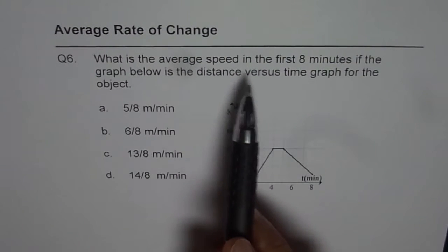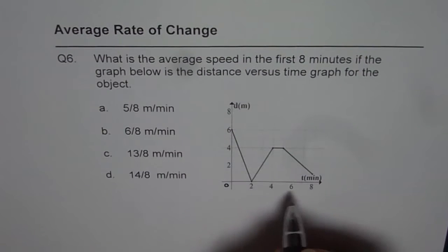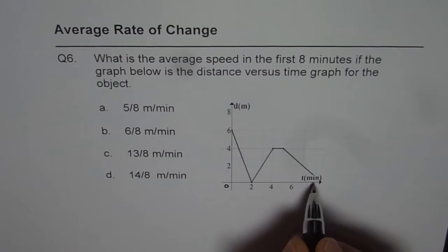When we are saying average speed in the first eight minutes, that means we have to find from T0 to T8. So that is the time period.